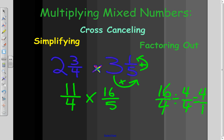then I can do the same thing when I'm multiplying in my problem here. So, I have 11 fourths times 16 fifths. You can see the 16 is in the numerator, and the 4 is in the denominator. So, I'm going to divide, or factor out, a 4 from the denominator,